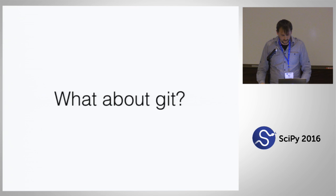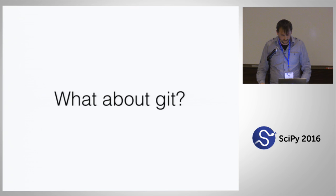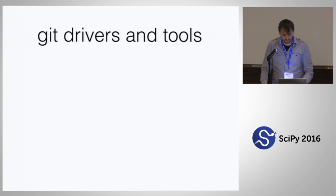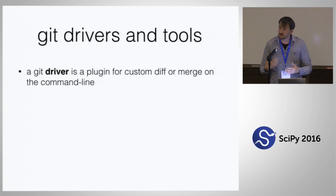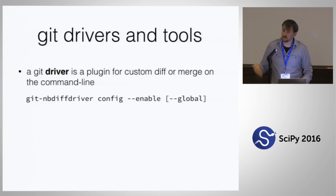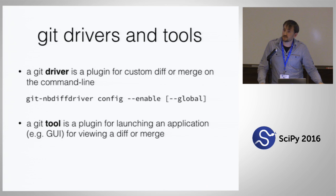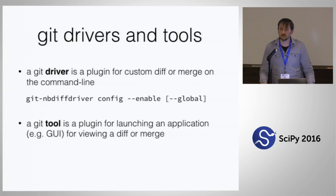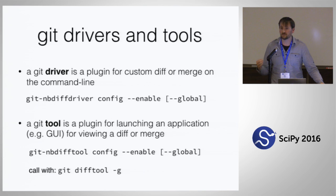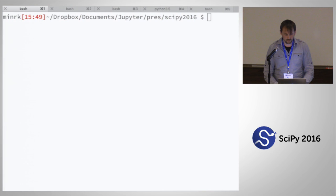What about git? Git has the notion of drivers and tools. A git driver is a plug-in for doing a custom diff or custom merge operation at the command line. We have a git nbdiff driver that you can enable to say, 'hey git, let me take care of diffs of notebooks.' A git tool is a separate thing for launching GUI applications — we've got nbdiff tool for that, which you invoke with 'git diff tool' instead of 'git diff', adding dash-g for GUI. And now we can demo a couple things — I can prove it actually works.